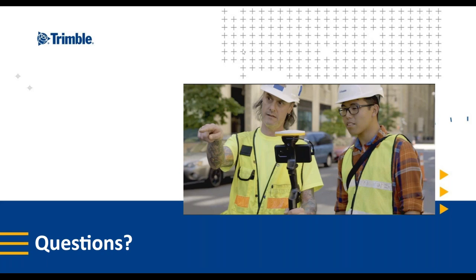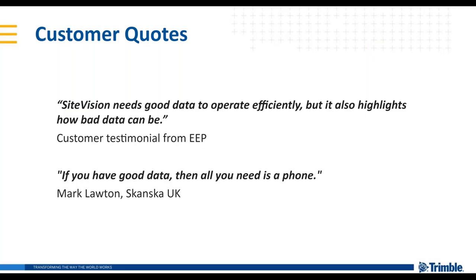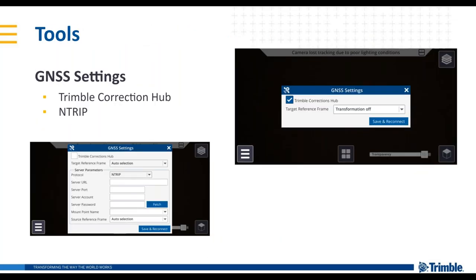There was a question about a private VRS network: if you have access to one, are you able to dial that in within Site Vision? Yes. When you go into the GNSS settings in Site Vision and want to use your own VRS, just uncheck the Trimble Correction Hub, and it will pop up the GNSS settings where you can enter your own NTRIP URL, IP address, port, and account information.